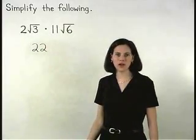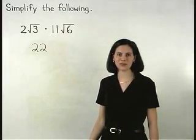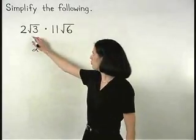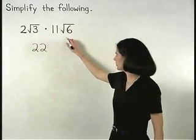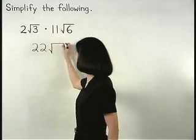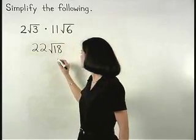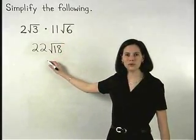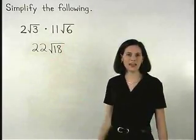And we multiply the numbers that are inside the radicals together. Root 3 times root 6 is root 18. So we have 22 times the square root of 18.